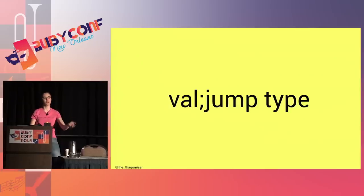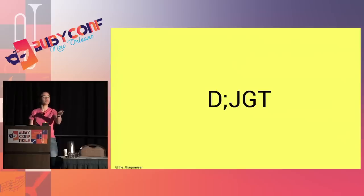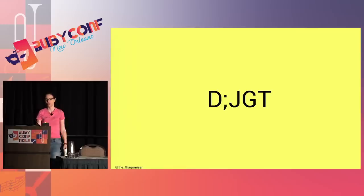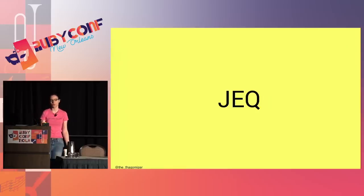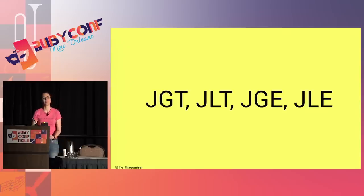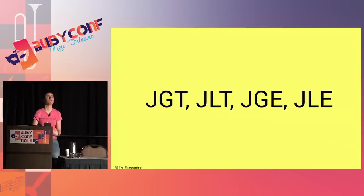Jumps have the format: value; jump-type. For example 'D;JGT' means jump to the line in the A register if D is greater than zero. All comparisons are relative to zero. Available jumps: JEQ (equal), JGT (greater than), JLT (less than), JGE (greater than or equal), JLE (less than or equal), and JMP (unconditional). Those are the only forms of branching logic in the entire language.